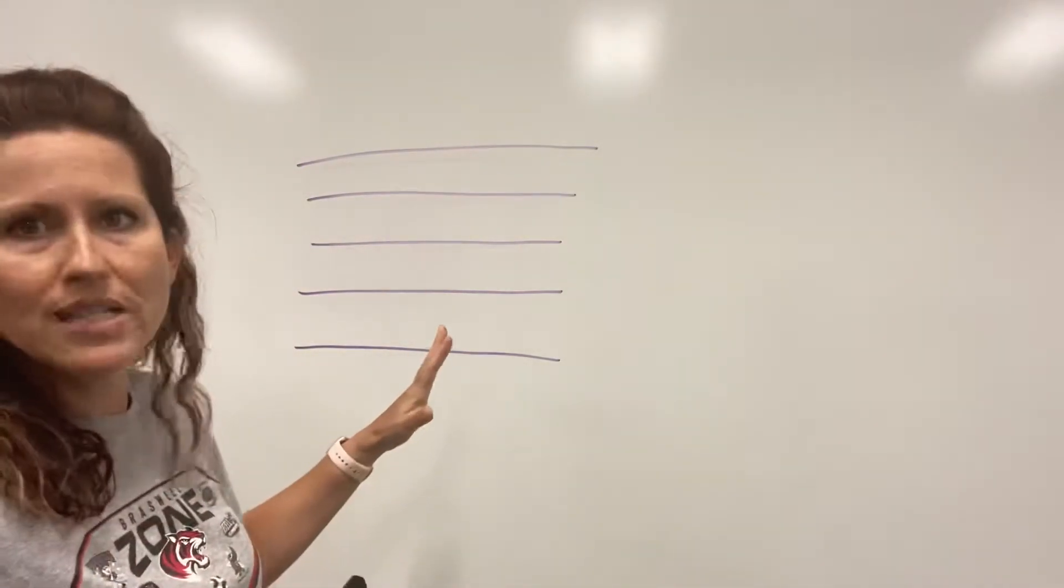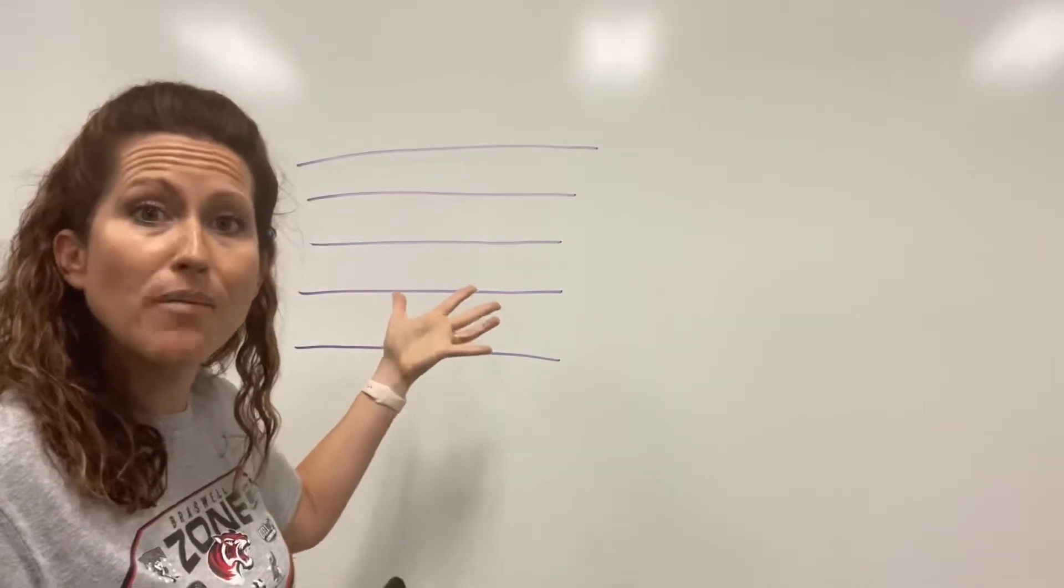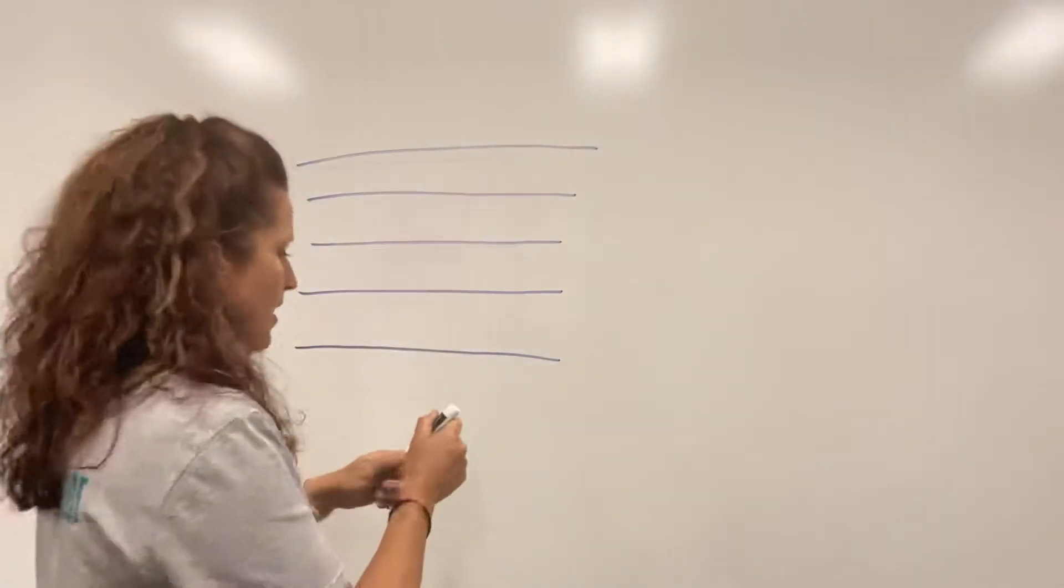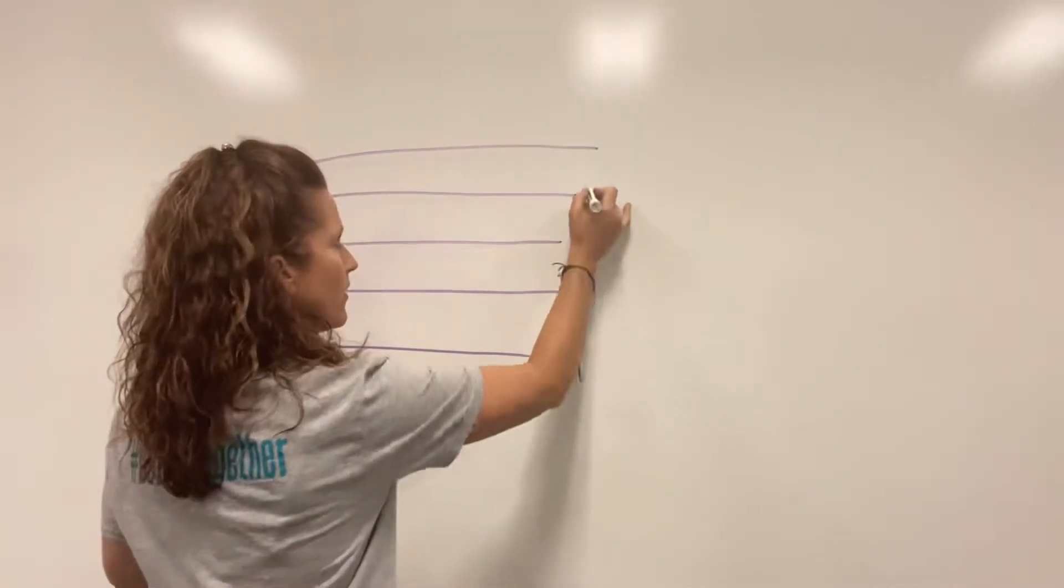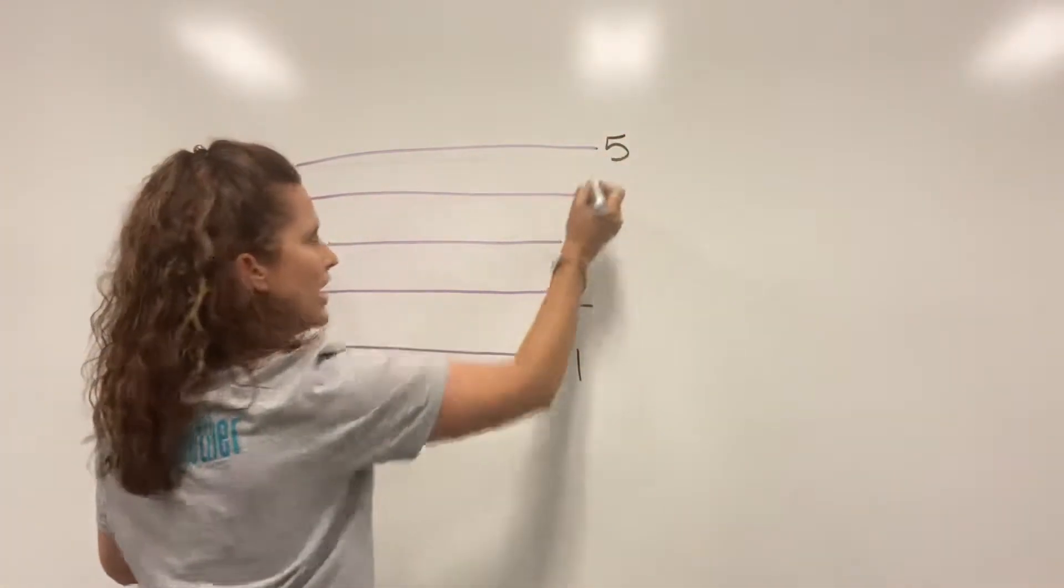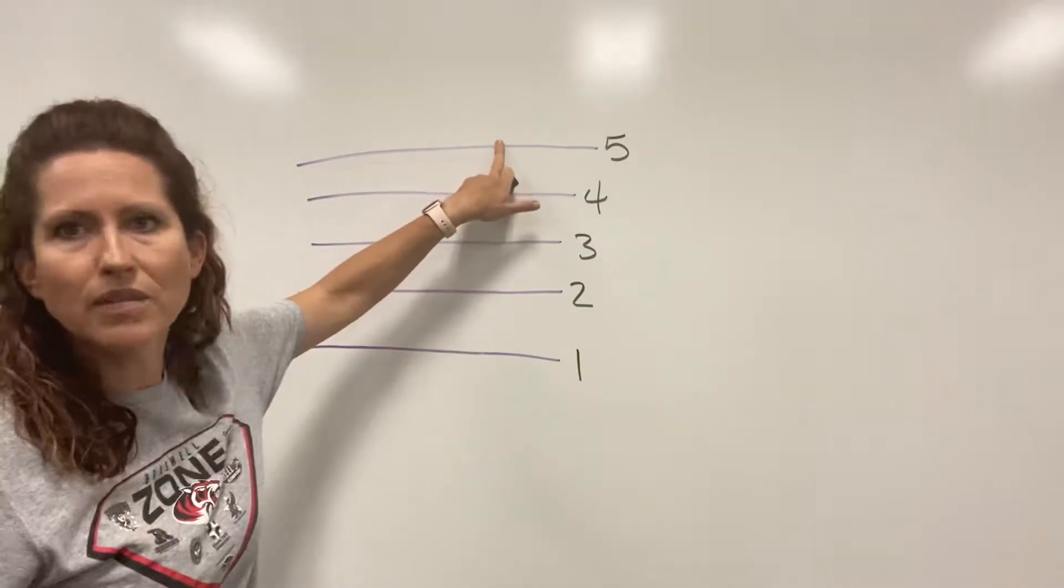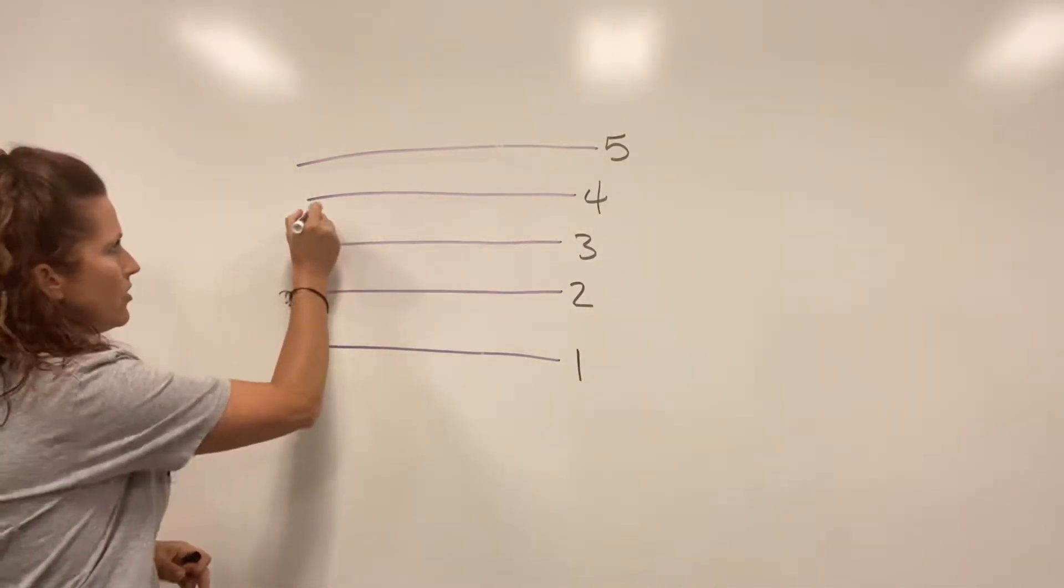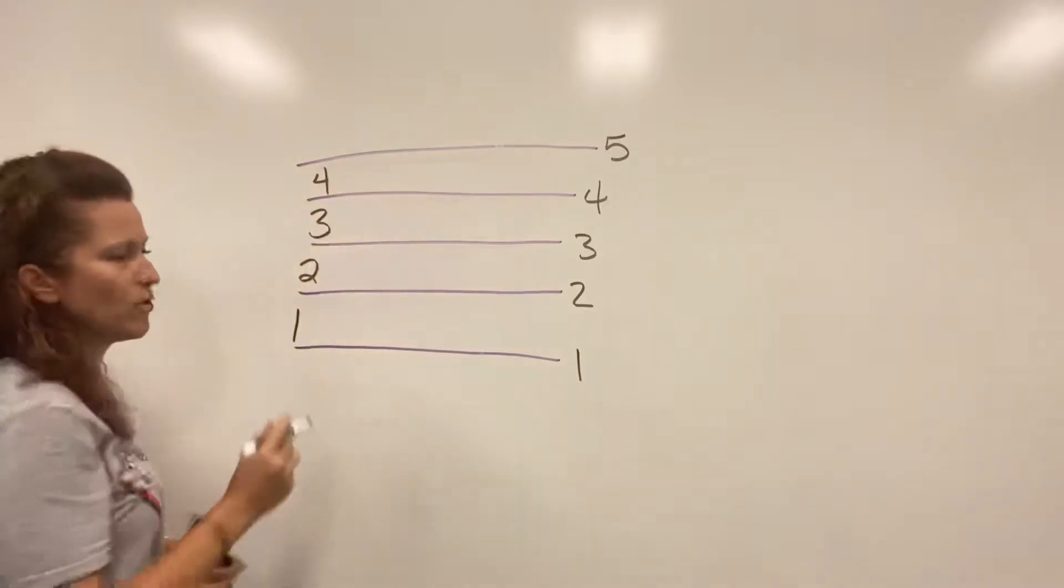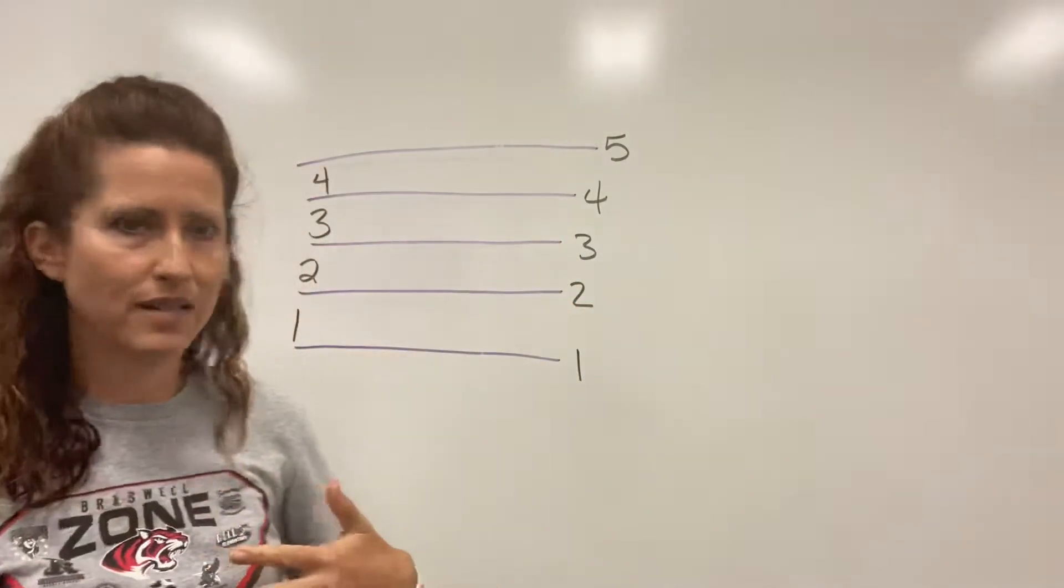So the way that we talk about the staff is we talk about lines and spaces and then we number them from the bottom to the top. So here's my lines 1, 2, 3, 4, and 5. So if I had a note that was here it would be the first line. If it was up here we talked about it being the fifth line. Spaces work the same way 1, 2, 3, and 4. So just like your hand you got five lines and four spaces.